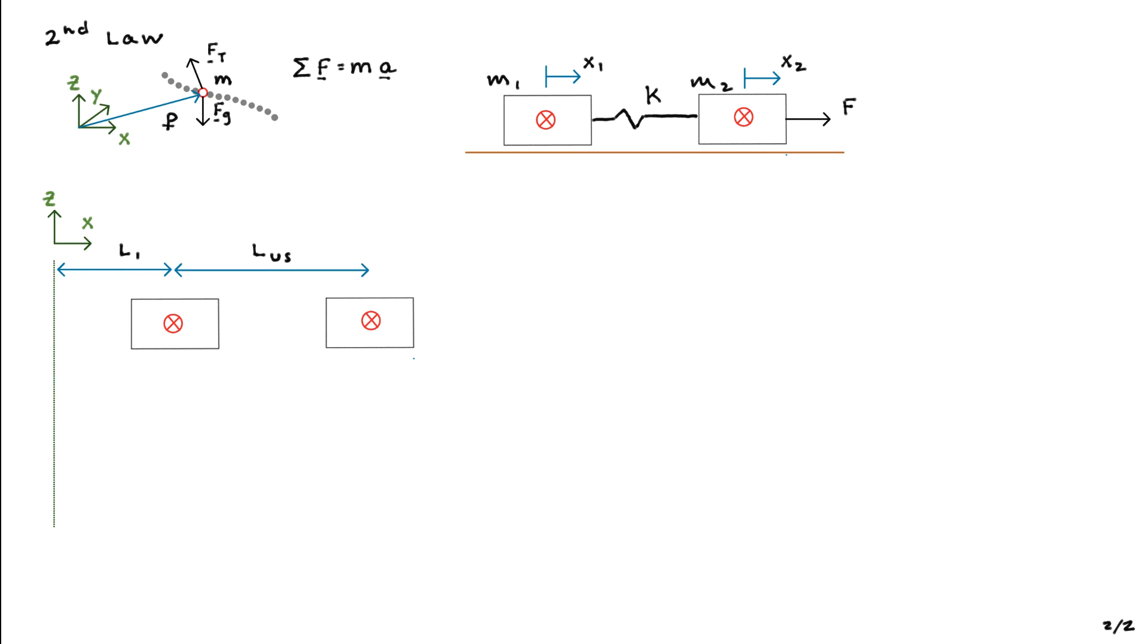So L1 is the initial location of that first block from the vertical wall. LUS is the unstretched spring length, the initial distance between M1 and M2, the two blocks. So imagine that you put this block system down on the table and just let it sit there, reach equilibrium, if in case you bumped it and it was jiggling a little bit, and this is what you end up with. You could measure with some device the distance of block one from the left wall and the distance between the two blocks. That's L1 and LUS.